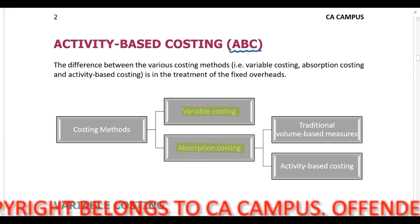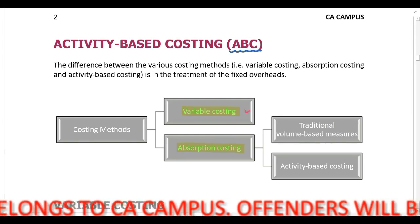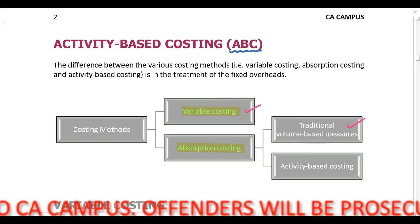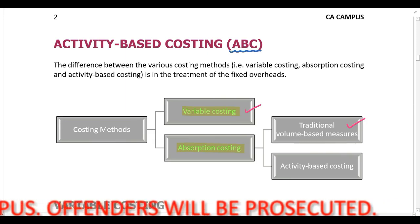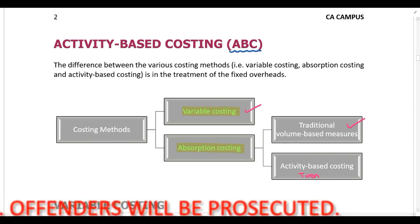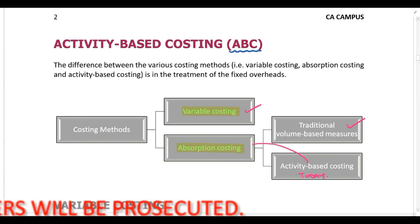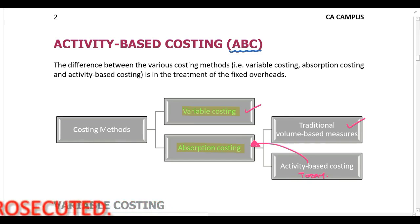We have already covered this in a previous lecture — we have already looked at variable costing and traditional absorption costing. In today's lecture we are going to be looking at activity-based costing. It's very important for you to understand that activity-based costing is also absorption costing. With absorption costing we can either use traditional absorption costing or activity-based costing.